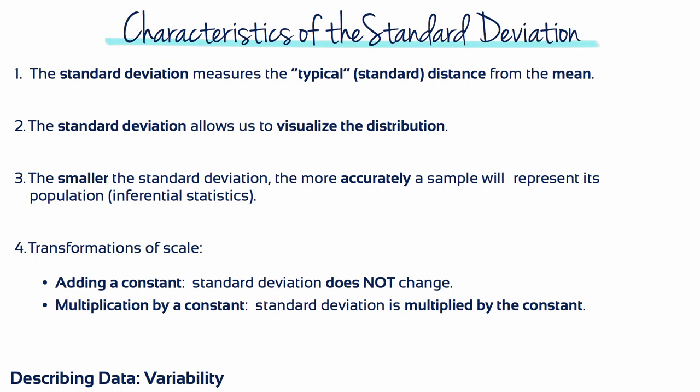The characteristics of the standard deviation can be summed up by four points. First, the standard deviation measures the typical or standard distance from the mean. Second, the standard deviation allows us to visualise the distribution. Third, the smaller the standard deviation, the more accurately a sample will represent its population. And fourth, in terms of transformation of scale: adding a constant means that the standard deviation does not change, whereas when scores are multiplied by a constant, the standard deviation is also multiplied by that constant.